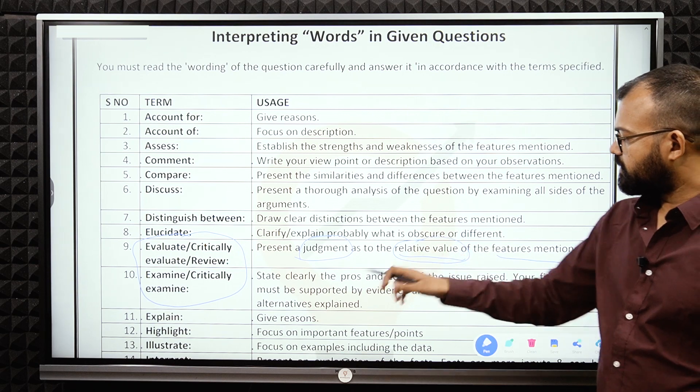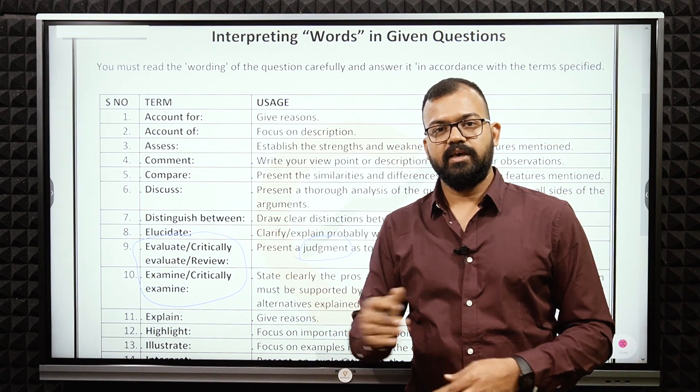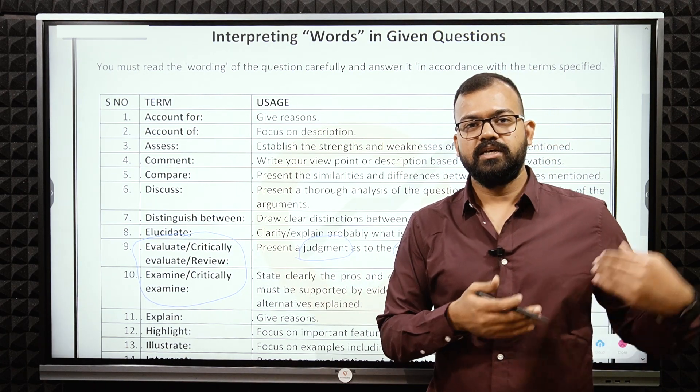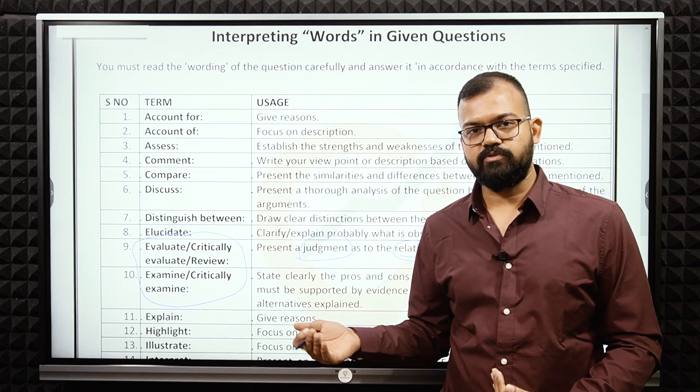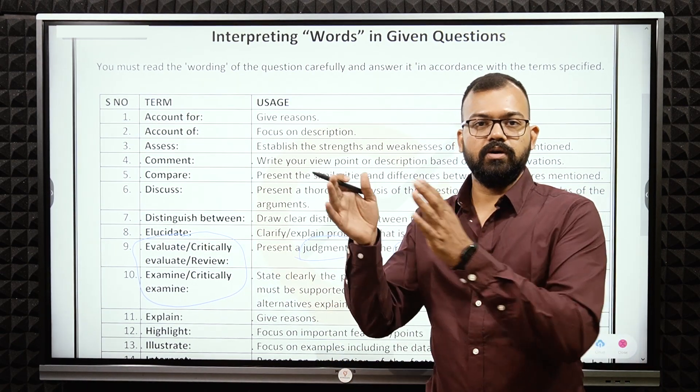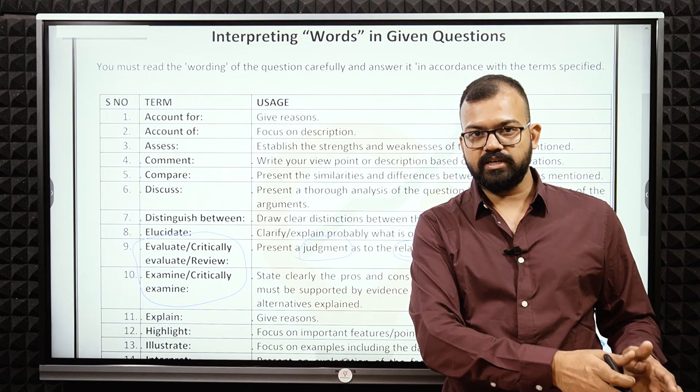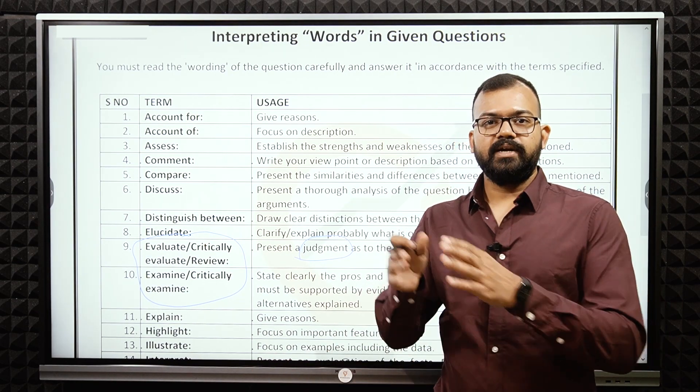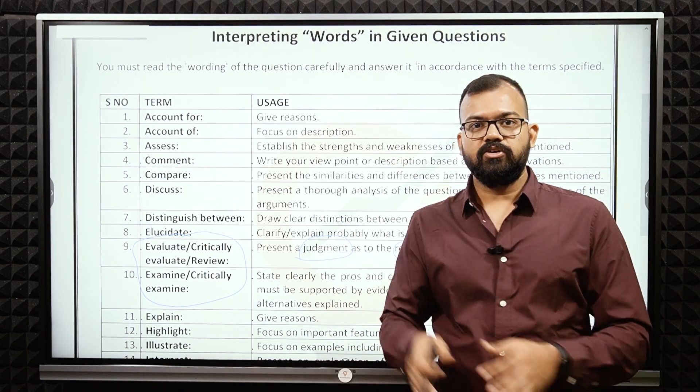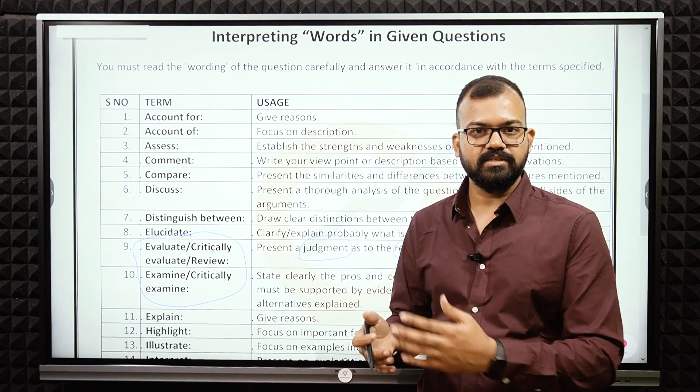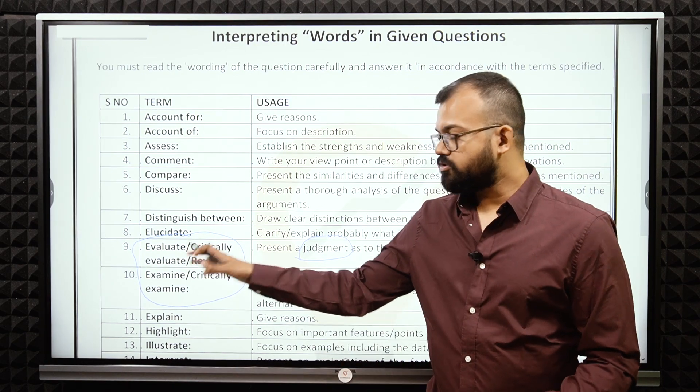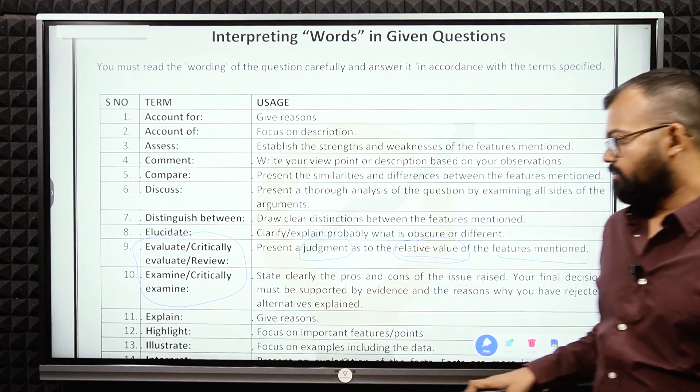If UPSC thinks that this person is not able to take any stance, you will lose marks. So you have to present a judgment as to the relative value of the features. At the end of the answer, you have to take stance. If we are saying critically evaluate the performance of Indian economy in last six, seven years or since 2014, you have to take a stance like: this government has done good in infrastructure sector, but not good in social sector. This government has done great work in ease of doing business, but not in the other areas. This government has done great work in tax efficiency, revenue mobilization, but not in the proper expenditure policy. Here you have to take stance. That is what my opinion is.